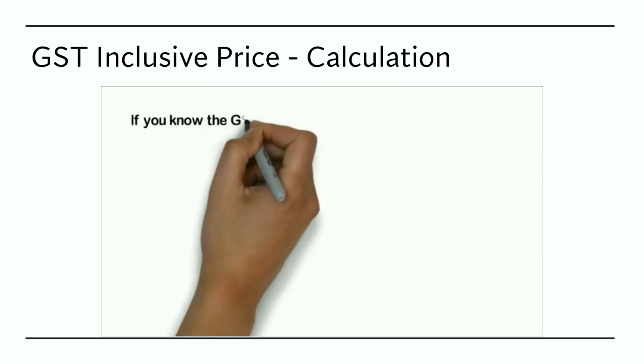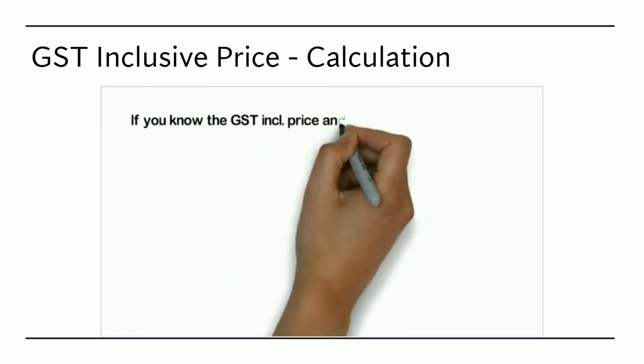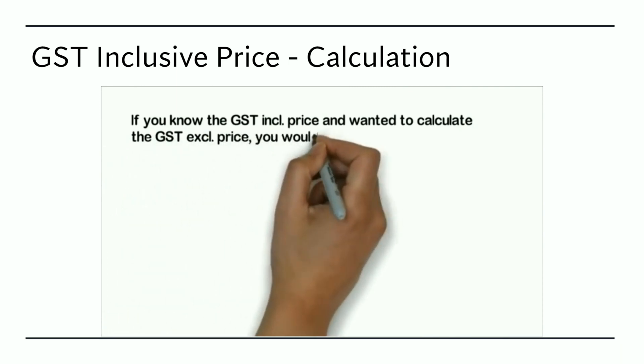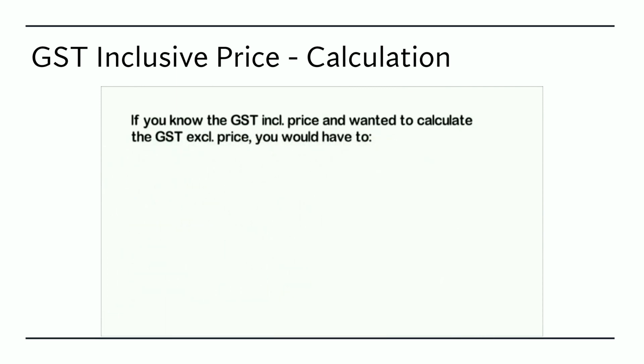If you know the price inclusive of GST and want to calculate the GST exclusive price going backwards, you would now need to divide the price inclusive of GST by 1 plus GST.